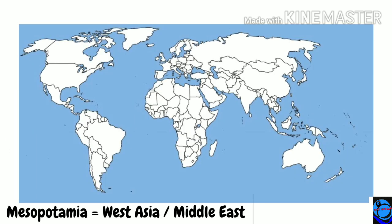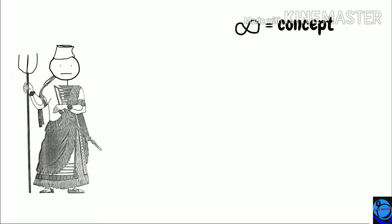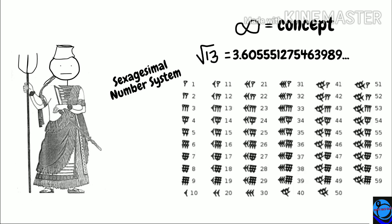Babylonia was an ancient Mesopotamian state comprising modern Iraq, Syria, and Egypt. The capital city, Babylon, was about 60 miles from modern Baghdad. Babylonians offered an early intuition on the infinite process — they could determine the square root of a rational number to any number of decimal places.